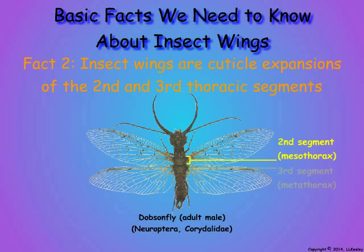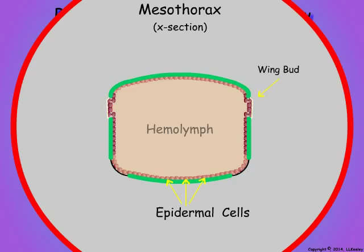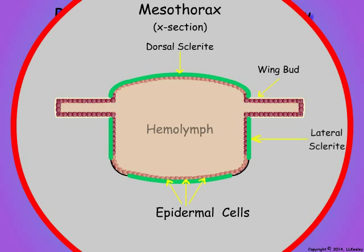Here is a cross section through one of the wing-bearing thoracic segments of an insect that has gradual metamorphosis. This will illustrate the basic structure of the insect wing. Insects were the first animals to evolve wings and fly. The insect wing is not an appendage like the legs that evolved into wings for birds and bats. Rather, the wings of insects are outgrowths of the body wall in the region between the dorsal and lateral cuticular sclerites.